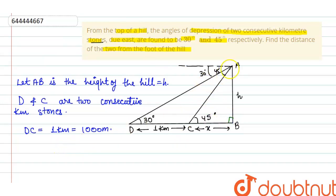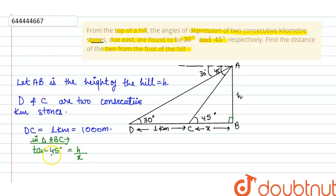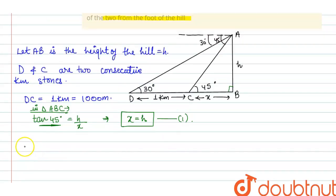Taking the first triangle — triangle ABC — as we know tan 45 degrees equals 1. So in triangle ABC, tan 45 degrees equals h upon x, and its value is 1, so I can write x equals h. Let this be our first equation.